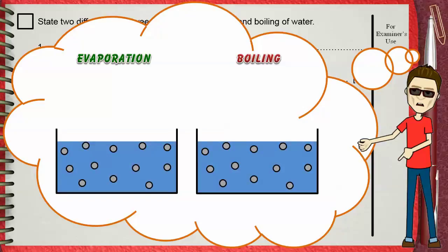Evaporation of water is the change from liquid state as water to gaseous state as water vapor. Also, boiling is the change from liquid to gas.